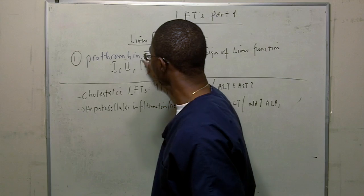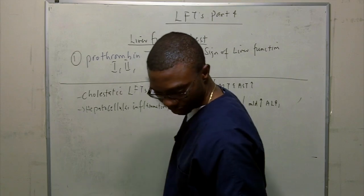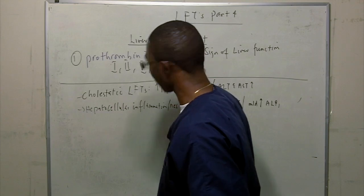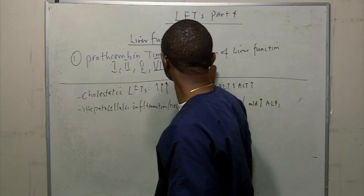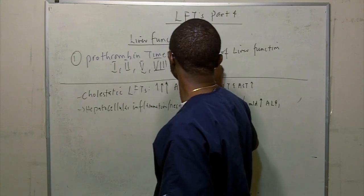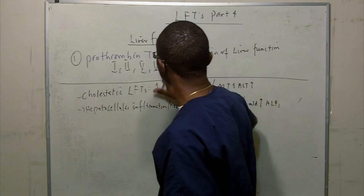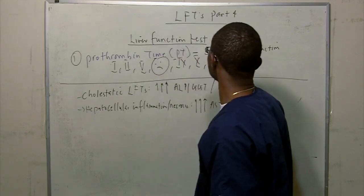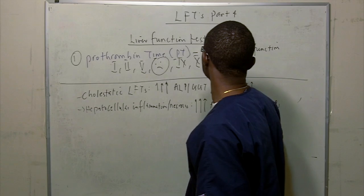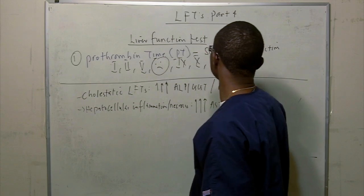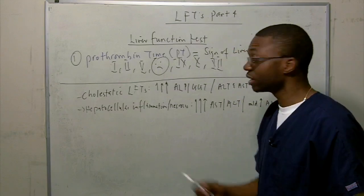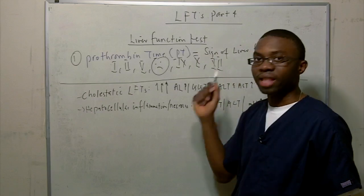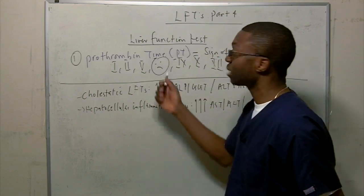The liver produces factor 2, factor 5, factor 9, factor 10 — note that factor 8 is not involved. So because if the liver is still working and making all these coagulation factors, your PT time should be normal.